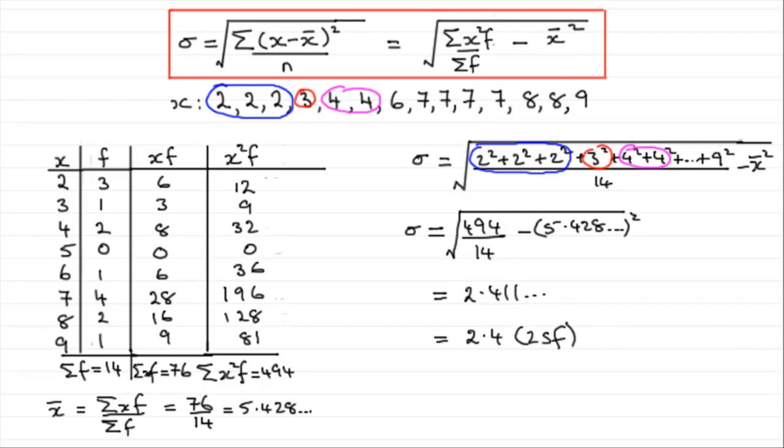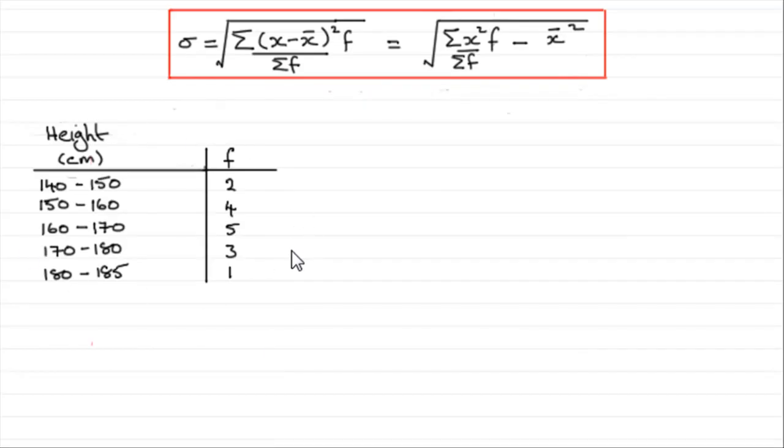Now, not only do you get data which is discrete, where you know the exact values, but you get data given in grouped frequency tables. Now, suppose I had a group frequency table, giving the heights of a number of students. And, we've got the frequency that these heights occurred in these class intervals. You can see that this 4 here represents 4 students with a height between 150 and 160 centimetres. We're greater than or equal to this lower number, but less than the upper number. So, for this one, 3 students had a height of more than or equal to 170 centimetres, but less than 180 centimetres, and so on.